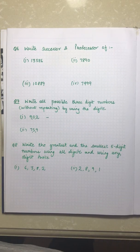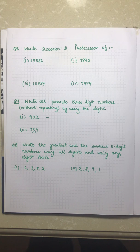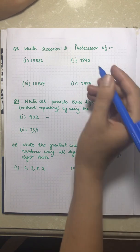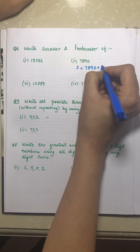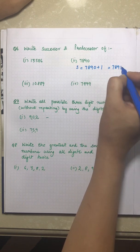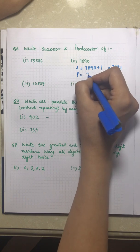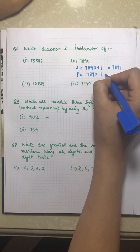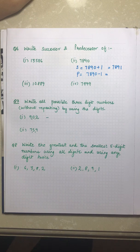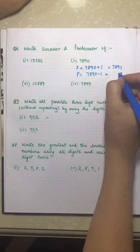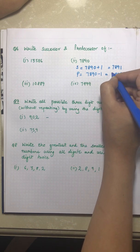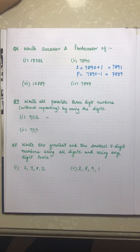Question number six says: write the successor and predecessor of the following numbers. Let's do part two. For the successor we add one — the answer is 7,891. For the predecessor we subtract one — the answer is 7,887.